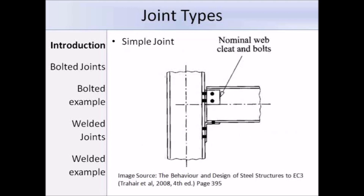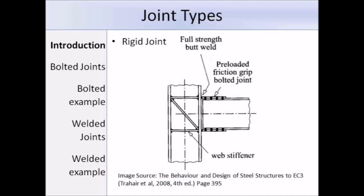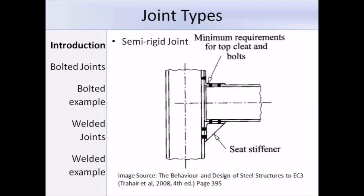Nominally pinned or simple joints are capable of transmitting internal forces without developing significant moments, and capable of accepting the resulting rotations under the design loads. Rigid and full strength joints have sufficient rotational stiffness to justify analysis based on full continuity. In the figure you can see a full strength butt weld, a pre-loaded friction grip bolted joint, and an additional web stiffener. Semi-rigid joints lie somewhere between nominally pinned and rigid.